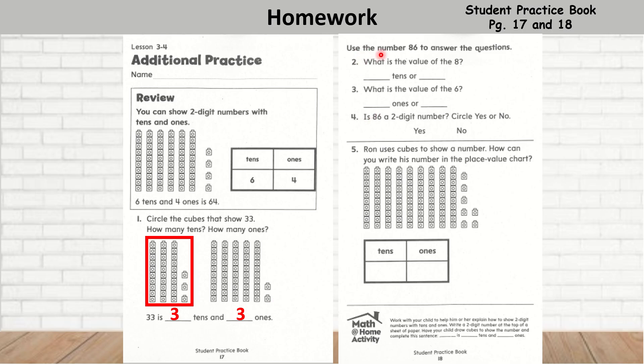Question two, it says use the number 86 to answer the questions. What is the value of the eight? Remember, the eight is in the tens column. So T, O, the tens is eight. So what is the value of the eight? The value of the eight is eight tens or 80. What is the value of the six? It's six, six ones or six. Question number four, is 86 a two-digit number? Yes, it is a two-digit number.